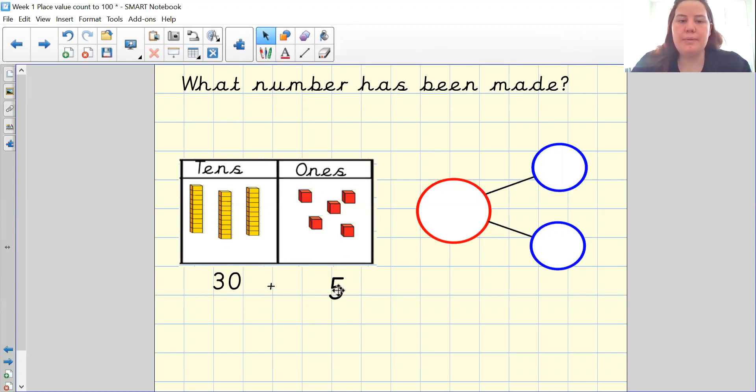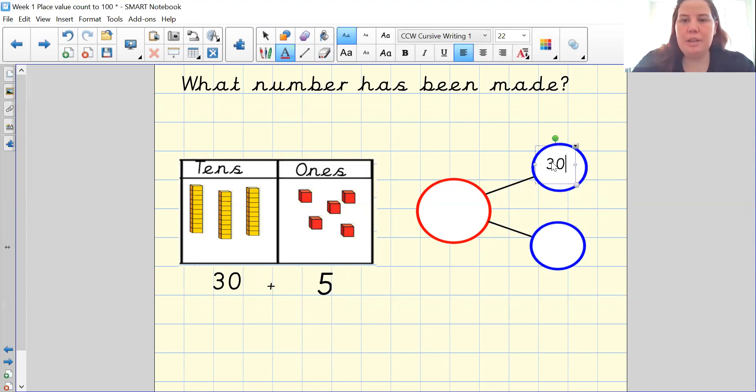That means I now need to put that into my part whole model. So 30 plus five is equal to 35. And as you can see, the only difference is the ones overlap on to the zero.